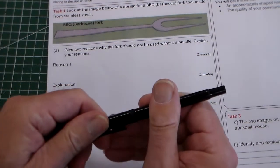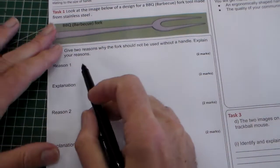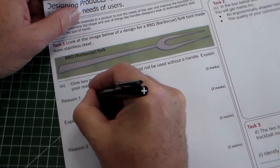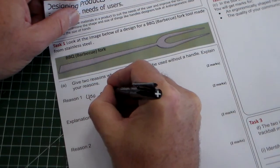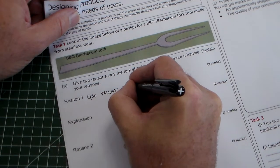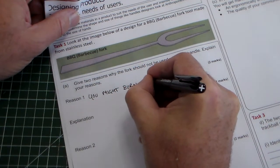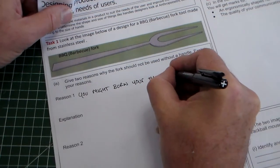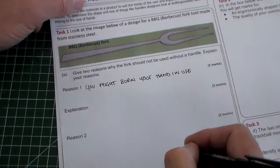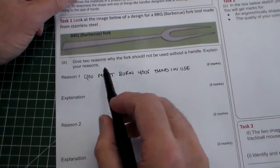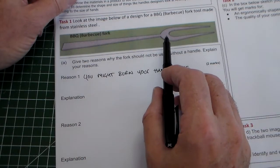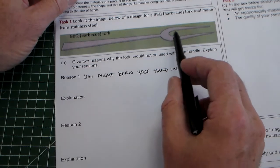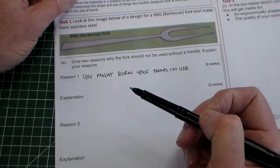So we've got reason one. What would be a reason? We say you might burn your hand in use. I'm trying to write as clear as possible here. Obviously stainless steel is a good conductor. If you leave this onto the barbecue or if this end is in the heat, the heat would travel up here and you might burn your hand.